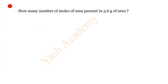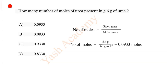How many number of moles of urea present in 5.6 gram of urea? Options: A 0.0933, B 0.0833, C 0.9330, D 0.8330. With the help of this formula we can calculate. So correct answer is A: 0.0933. Thanks.